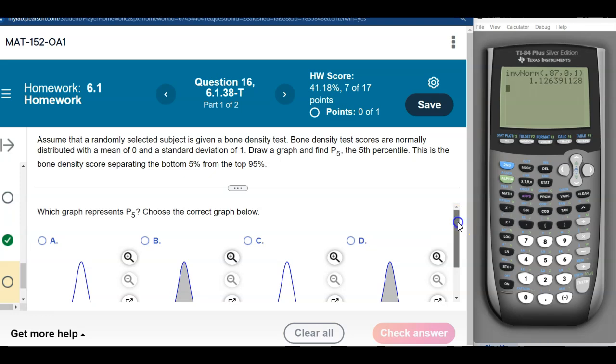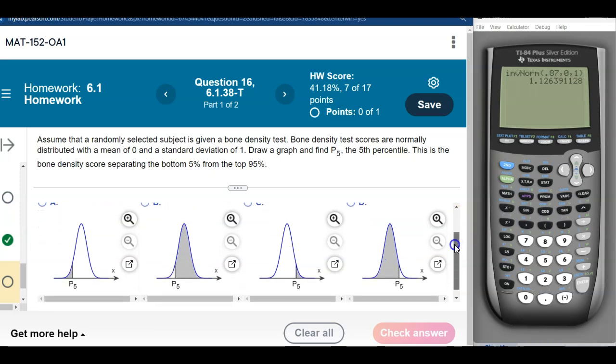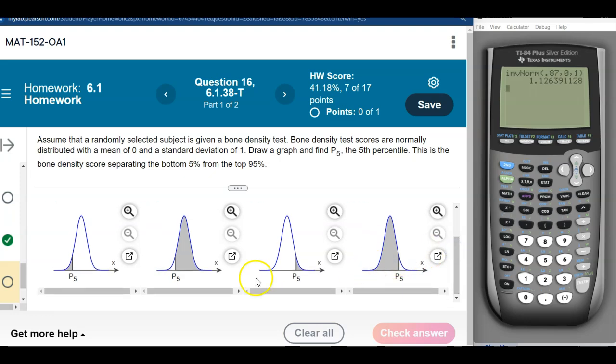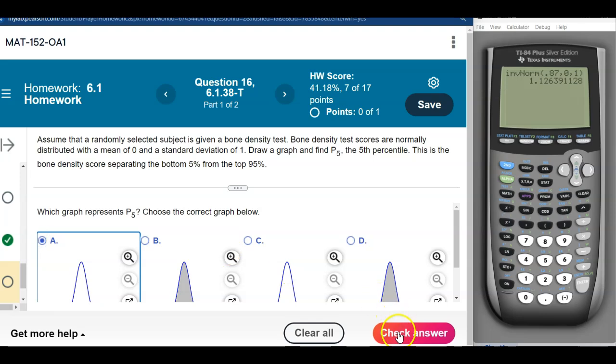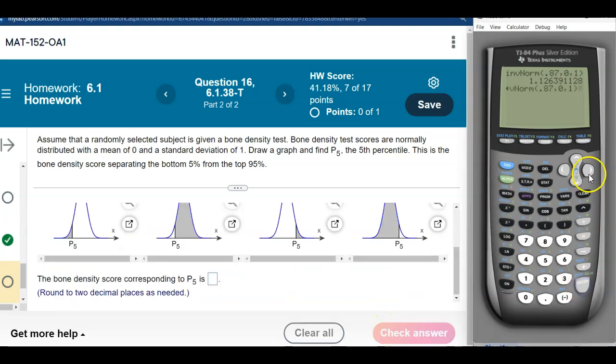All right, same problem, but this time the bottom 5% from the top 95. So P5, that means 5% is below it. So hardly anything is below it. So that's, again, below is to the left. So that's going to be this one down here. All the rest of them have far too much, too far to the right. So there is P5, and again, we're going to do second enter. Instead of 87%, it's 5%. Remember, 5% is 0.05. So be really careful when you type in these single-digit percentages. All right, once it's two places, so that would be negative 1.65.